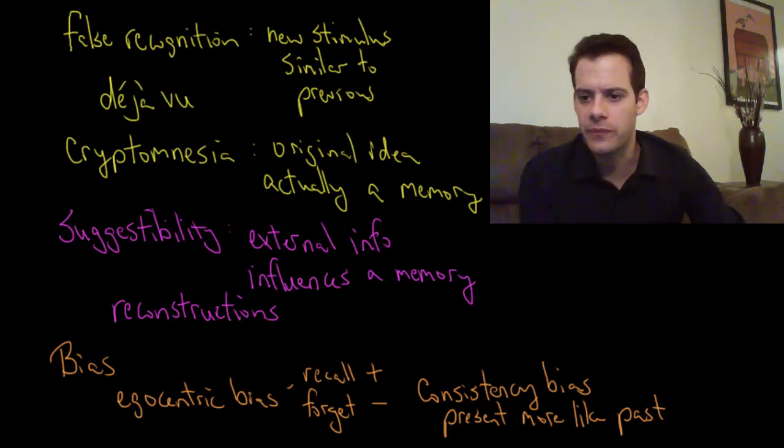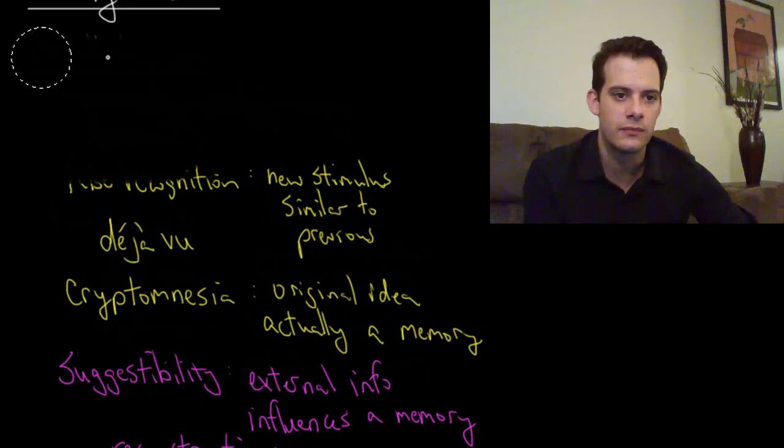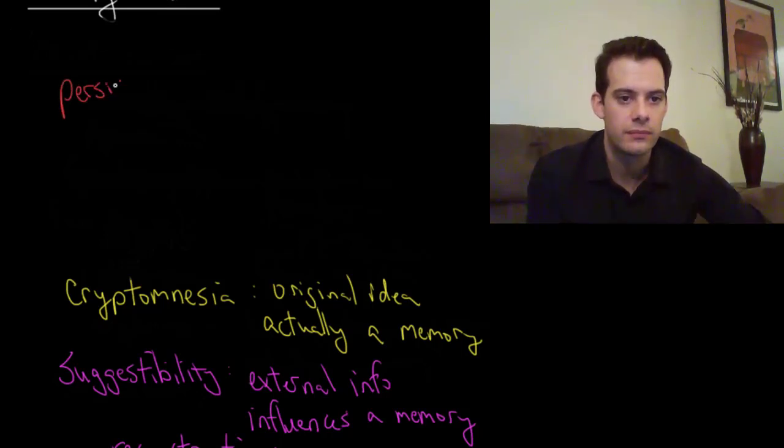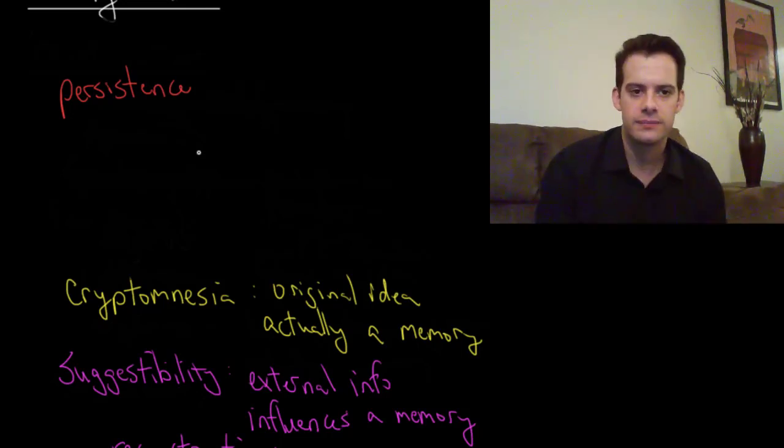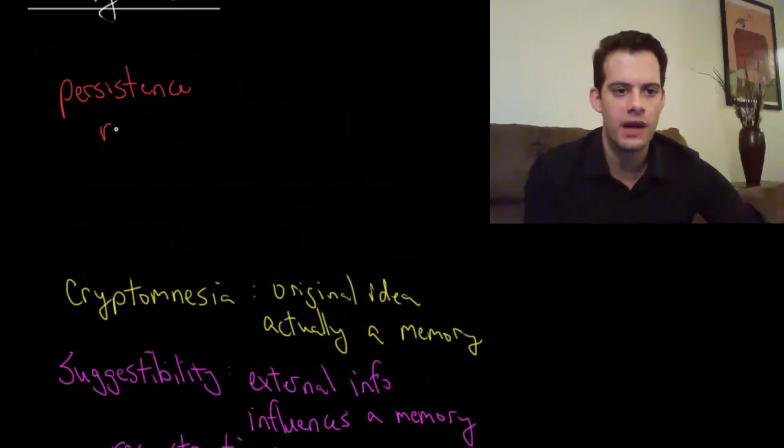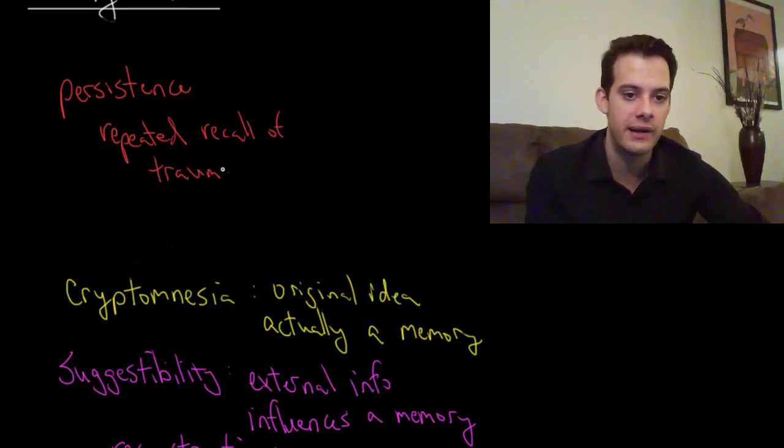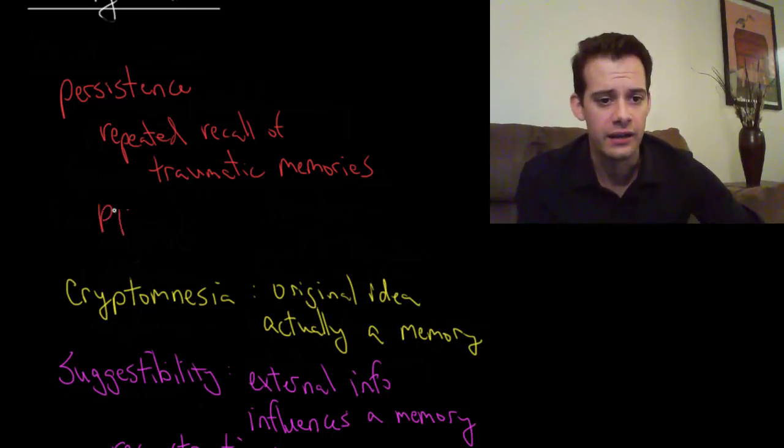Okay, and the last memory failure that we'll look at is persistence. And so persistence refers to when memories are repeatedly recalled and this usually refers to traumatic negative emotional memories. So people who've experienced some trauma may be unable to stop these memories from coming to mind. These memories keep coming back to them.